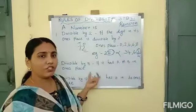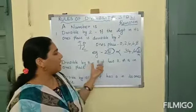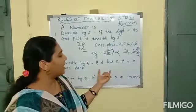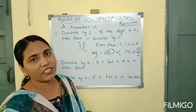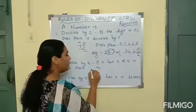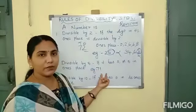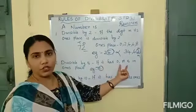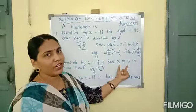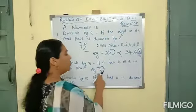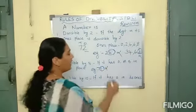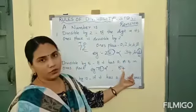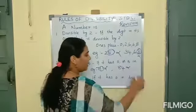Next one: divisible by 5. How will you check a number is divisible by 5? If it has 0 or 5 in its ones place. For example, 71 — is it divisible by 5? No, because 1 is in the ones place. What should come in the ones place? 0 or 5 should come. For 84, in ones place 4 is there, so this also cannot be divided by 5.